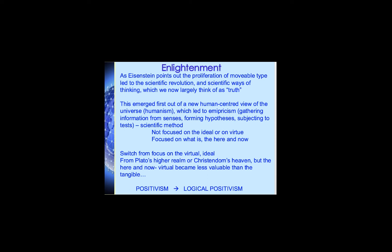That idea of truth is no longer focused on the ideal world or on virtue — it's focused on what is in the here and now before us; the here and now that until this period had been seen as not worthwhile, nasty, brutish, and short, while the higher sphere was what was worth focusing on. This is a profound epistemic shift: a switch from the focus on the virtual as ideal — from Plato's higher realm or Christendom's heaven — to the here and now, where the virtual then became seen as less valuable than the tangible. We get 'virtual' shifting around 1500 to mean the lesser copy of the real.